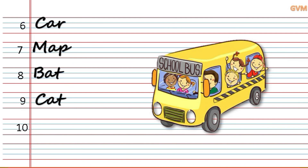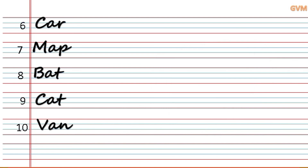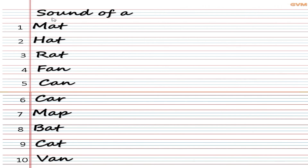Number ten is V-A-N, van. This is a van picture. हमें Sound of A में ऐसे words write करने हैं जिनकी कुछ meaning हो — यानि वो कोई meaningful word हो।